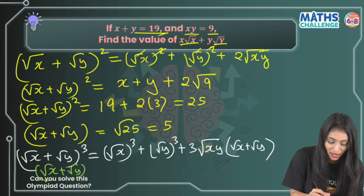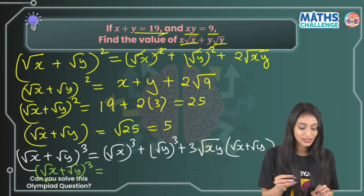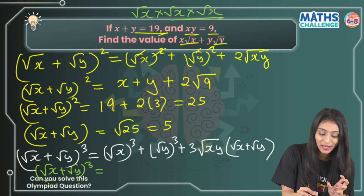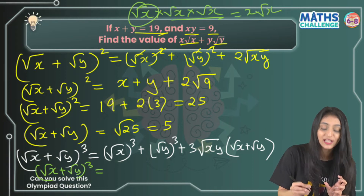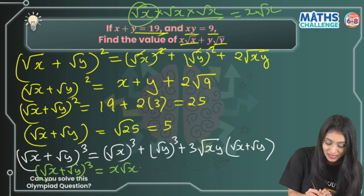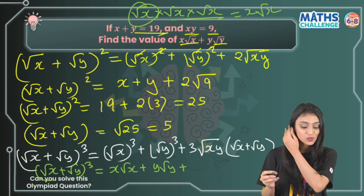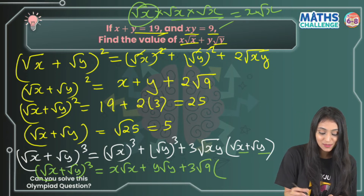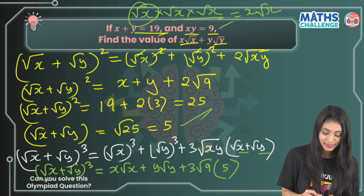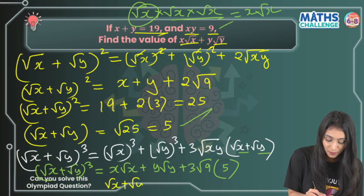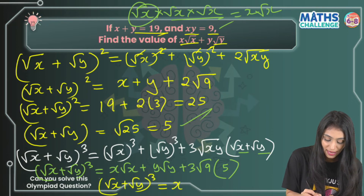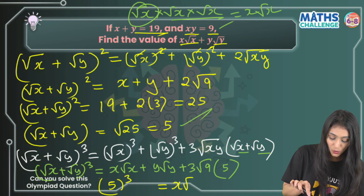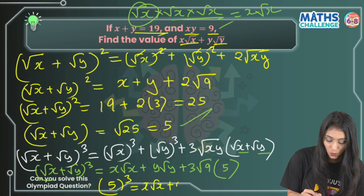Now (√x)³ means √x times √x times √x — two of them form x, and one √x is left — so that's x√x. Similarly, (√y)³ is y√y. Now xy is 9, so √(xy) is √9 which is 3, and √x + √y we already found is 5. So (√x + √y)³ equals x√x + y√y + 3 times 3 times 5, which is plus 45.